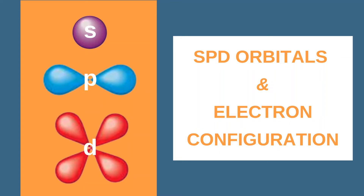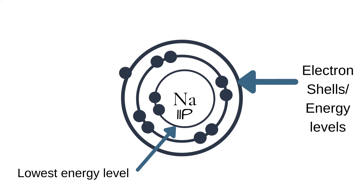In this video we will be learning how to write electron configurations. In years 9 to 12 you learnt about electron shells and electron arrangements, so that's the 2, 8, 8 and so on arrangement.